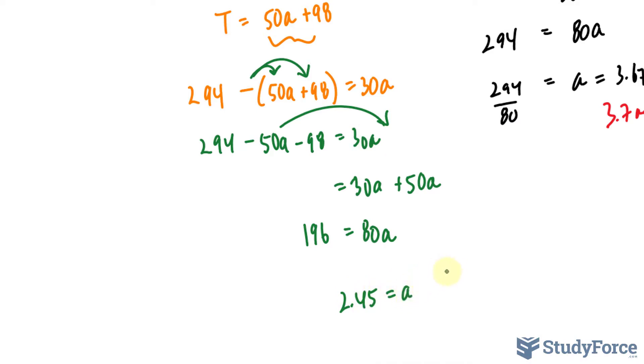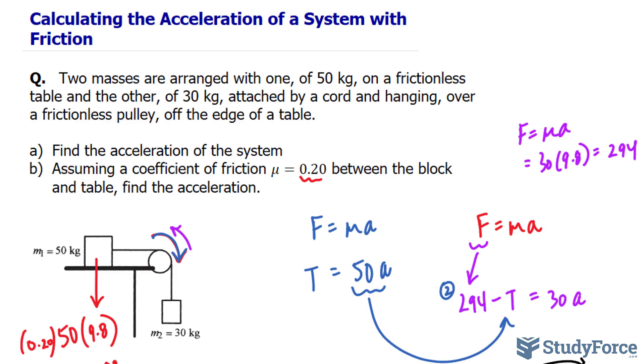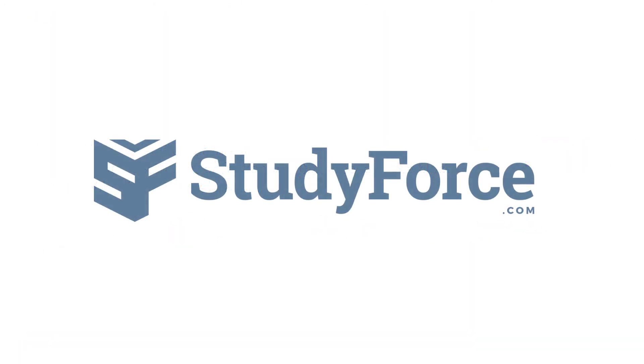So this makes sense if you think about it. The acceleration decreased because now there's a force of friction that's preventing that mass from moving to the right quickly. 2.45 meters per second squared is the answer for B, and that is how to calculate the acceleration of a system when taking into account friction.